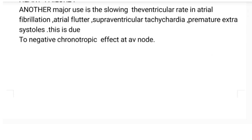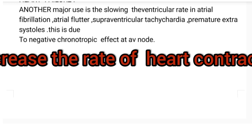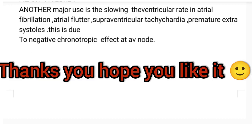Arrhythmia means irregular heartbeat, and atrial fibrillation, atrial flutter, and supraventricular tachycardia are all divisions of arrhythmia. The slowing of ventricular rate is due to the negative chronotropic effect, meaning the force of contraction decreases. This is because of atrioventricular node blockade. Digitalis is also useful for sodium-potassium ATPase blockade.